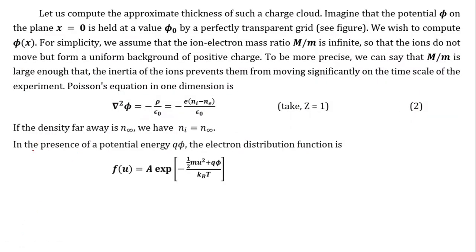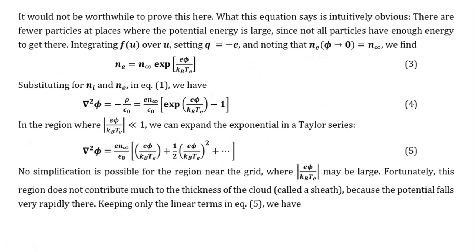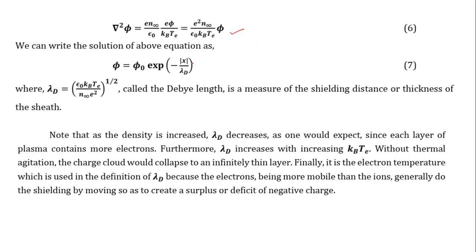To find the Debye length, we use the Poisson equation: ∇²φ = −ρ/ε₀, where ρ is the charge density from ions and electrons. Applying the Maxwell–Boltzmann distribution and expanding for small potentials (keeping only the first term), we get φ ∝ exp(−r/λ_D), where the Debye length λ_D is given by the standard expression. The Debye length increases with temperature and decreases with density.